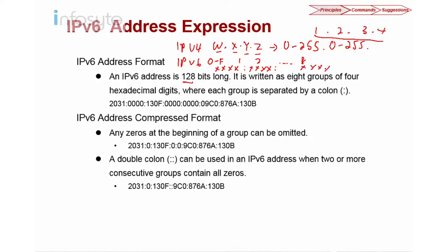This is an example of how an IPv6 address looks — and it's pretty long. Since we can't expect to remember such long strings, a compressed format was developed. A group of all zeros — 0000 — can be represented by a single digit 0. Also, leading zeros in a group have no meaning and can be removed, but trailing zeros do have meaning and cannot be removed.